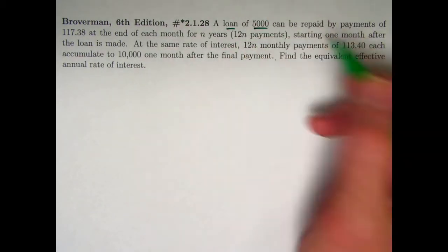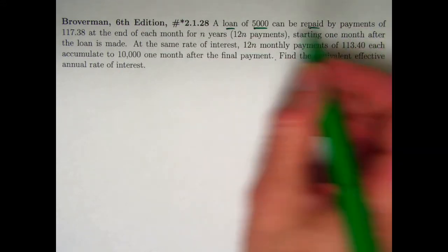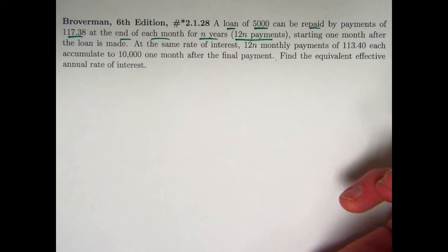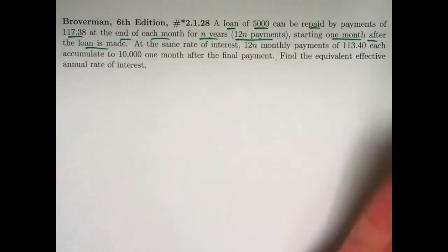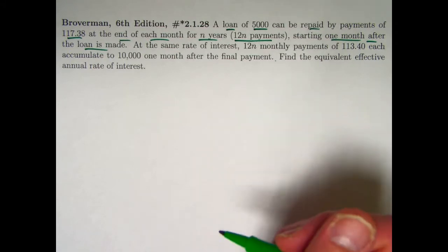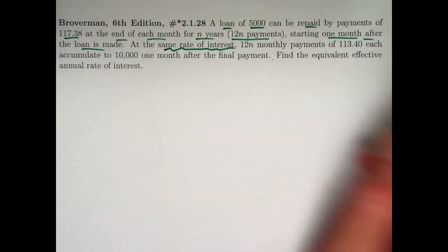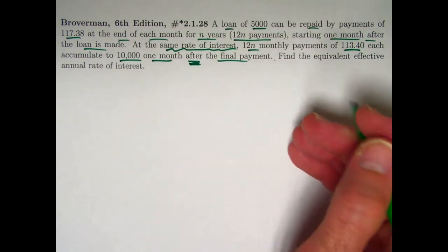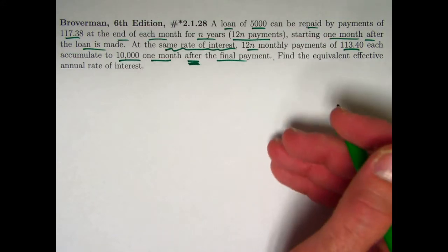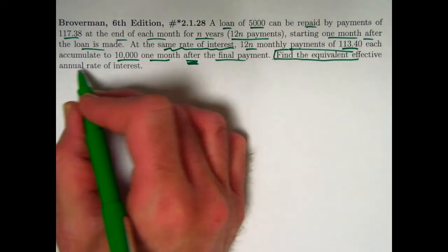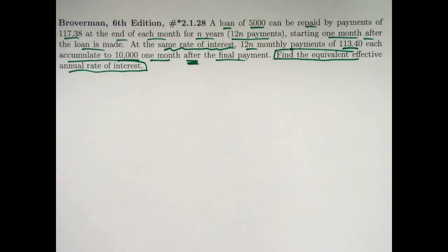What we have here is a loan: we're borrowing 5,000, to be repaid by payments of 117.38 at the end of each month for n years — so there are 12n end payments, one each month, starting one month after the loan is made. The loan is made at time zero and payments start at time one in months. You can think of the 5,000 as the present value of an annuity immediate. Also, payments of 113.40 accumulate to 10,000 one month after the final payment, which is thought of as the future value of an annuity due. The goal is to find the equivalent effective annual rate of interest.